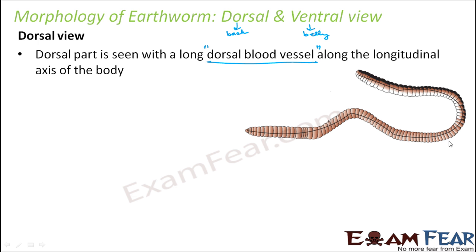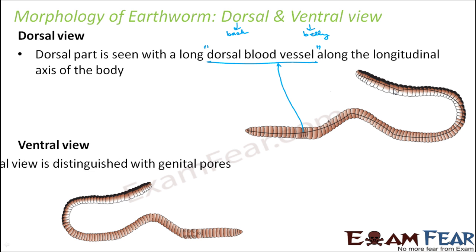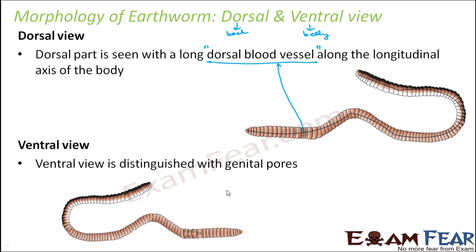The dorsal blood vessel runs throughout the length of the body. This structure visible here is the dorsal blood vessel, so if you can see it, that is the dorsal side. On the ventral side, towards the belly, the view is distinguished by genital pores — the male and female genital pores, which are small openings through which male and female sex cells are exchanged during reproduction. So, look for the dorsal blood vessel to identify the dorsal side, and look for the genital pores to identify the ventral side.